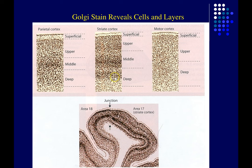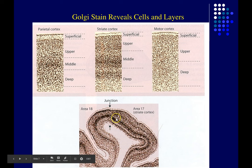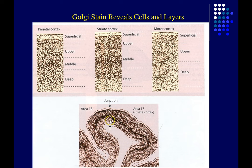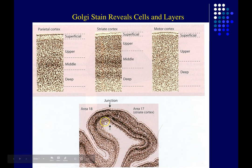For example, striate cortex — also known as area 17, functionally primary visual cortex — has an extra deep stripe or striation in the deeper layers; that's why it's called striate cortex. Motor cortex has a different structure with upper and deep layers but without that dark band in the middle layers. This image shows the border between area 17 and area 18 — these are different cortical regions or cortical fields. This is one way we can use staining to reveal the structure of the nervous system.